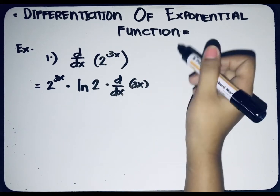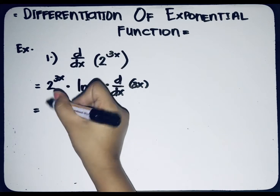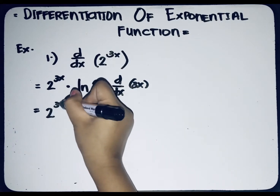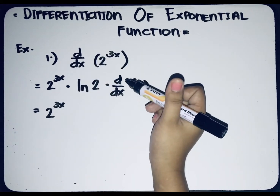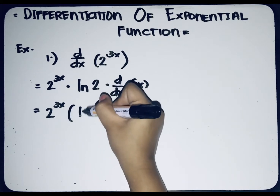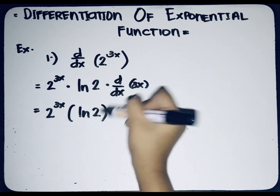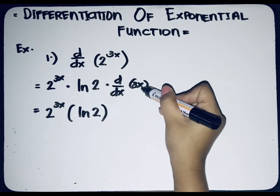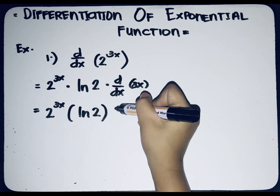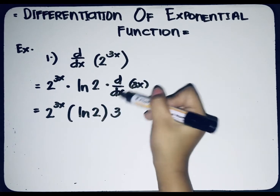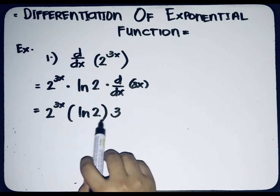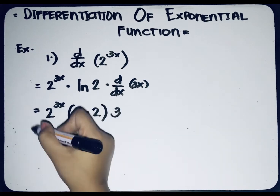For the second step, we copy 2 raised to 3x, multiplied by ln(2), and then multiplied by the derivative of 3x, which is equal to 3.